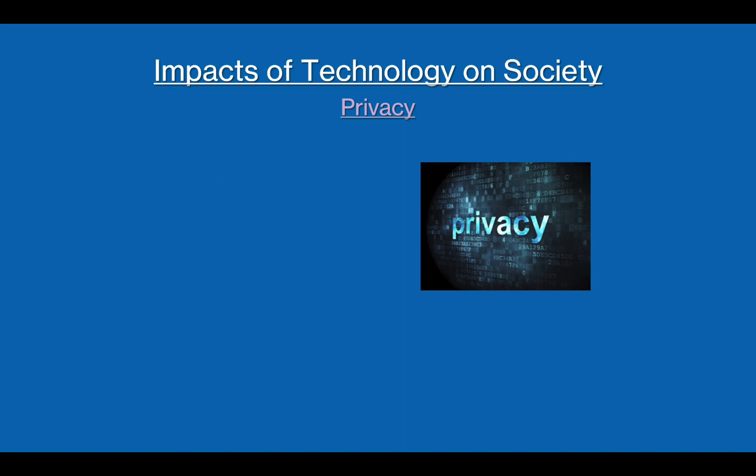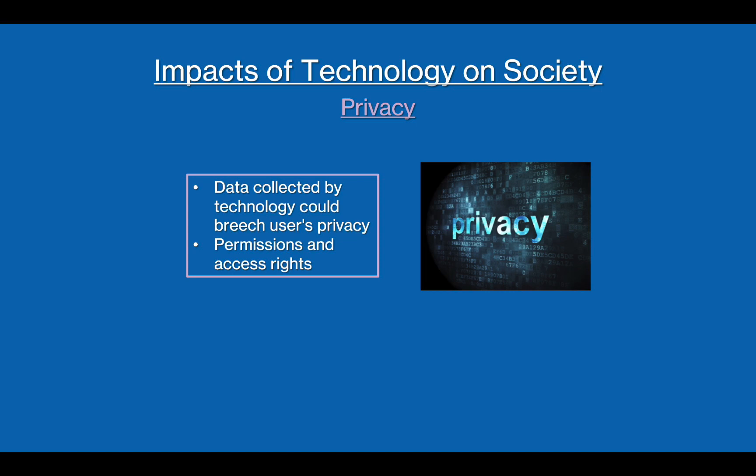There are some privacy concerns around technology, as once the data is inputted into a computer system, it is difficult to ensure that it won't be copied or shared. This puts people's personal data at risk and compromises their privacy. There are privacy laws, such as the Data Protection Act, to ensure that organisations in the UK comply with the law regarding data privacy. However, this law may be difficult to enforce in certain scenarios.